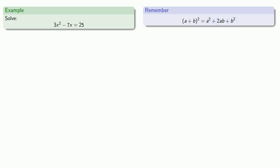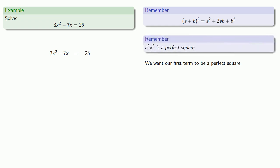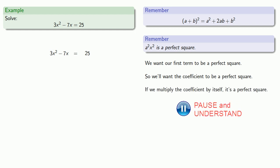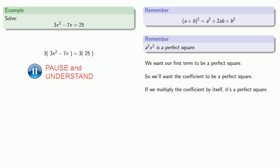So let's think about this. We want our first term to be a perfect square. And the first thing to remember is that a²x² is a perfect square. So we'll want the coefficient to be a perfect square. And if we multiply the coefficient by itself, it's a perfect square. So let's start out by multiplying everything by 3, the current coefficient of x². And so now our first term is a perfect square.